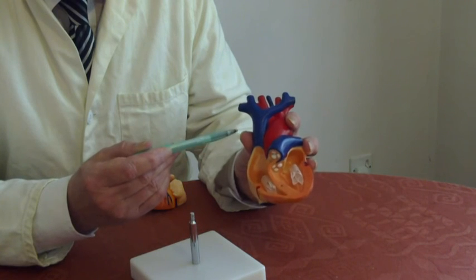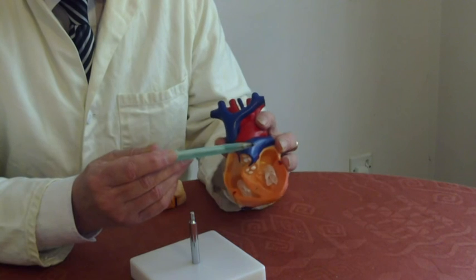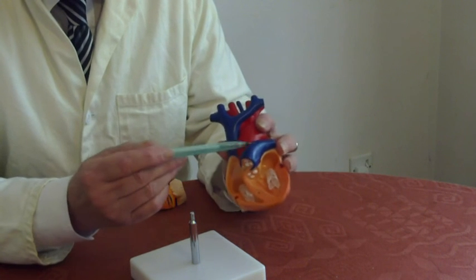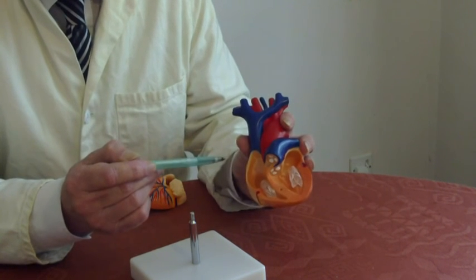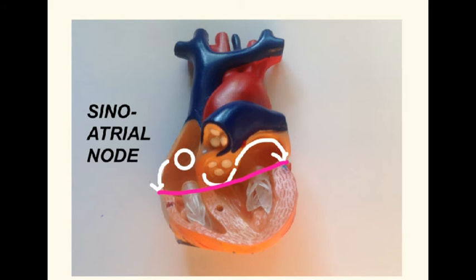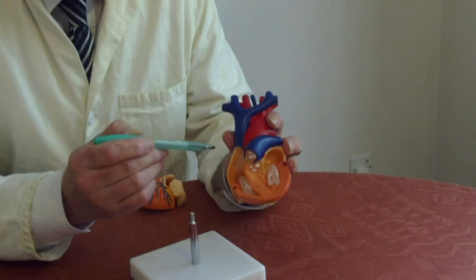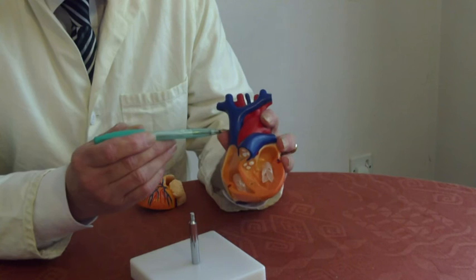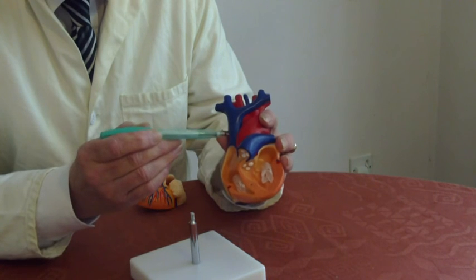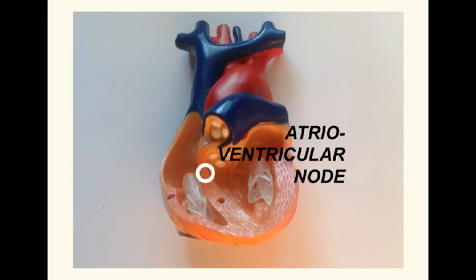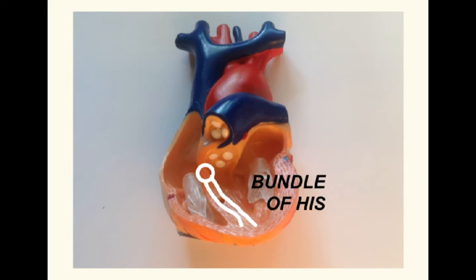The impulses can't spread onto the ventricles and cause ventricular systole because there's an insulating layer of collagen. However, they do reach another node called the atrioventricular, or AV, node, and after a brief delay this sends the signal down the bundle of His and onto the Purkinje fibers.